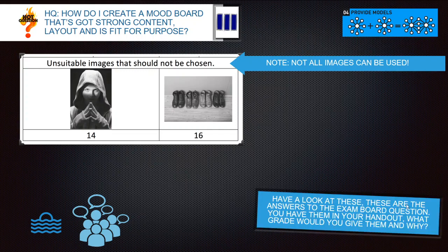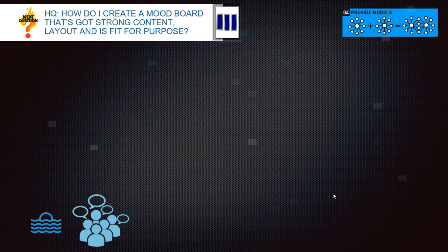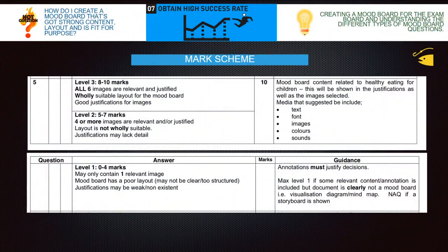Have a look at these examples — these are the answers to the exam board questions. You can rewind the video to have a look at them again. As we go through this, you're going to be grading whether you think it's level one — up to three relevant images — level two, four or more relevant images with some suitable justifications that might lack detail, or level three, where all six images are relevant and justified.